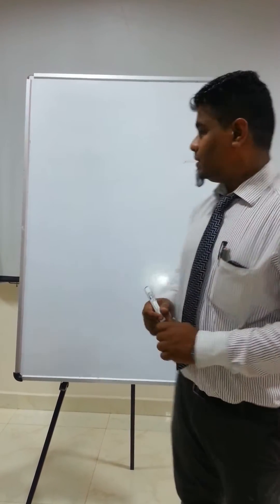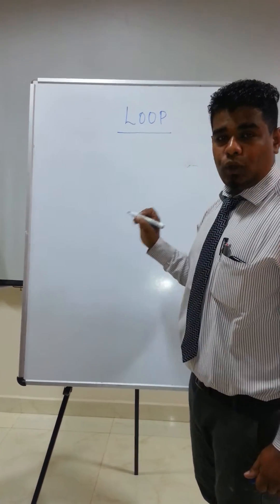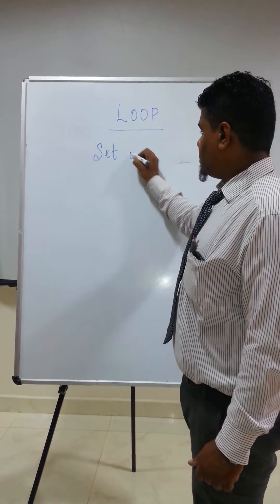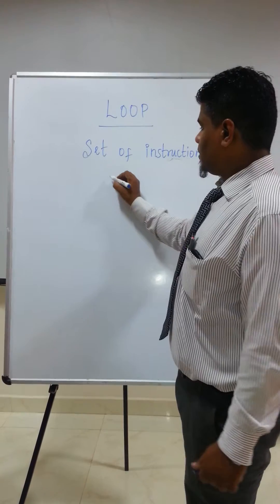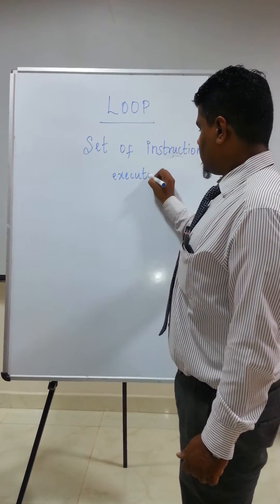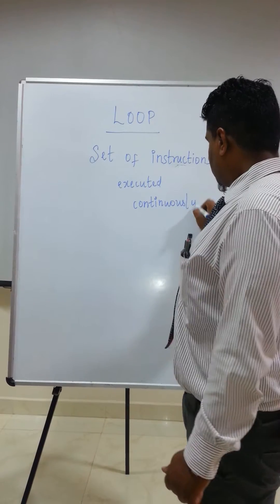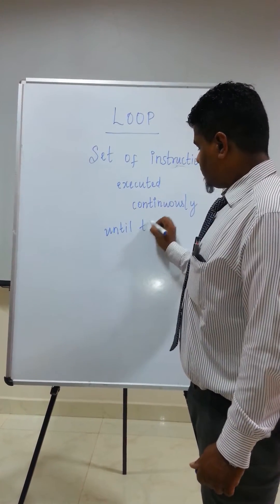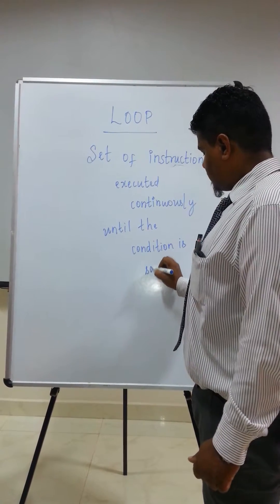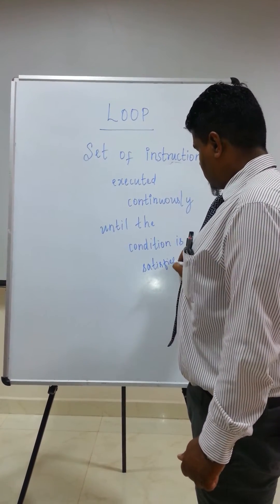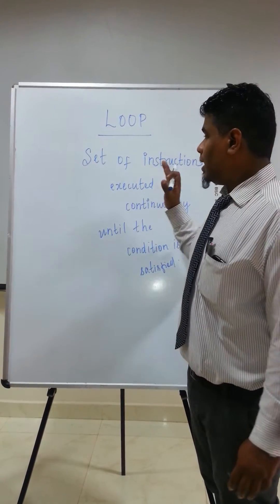Now I will tell you what a loop is. A loop is a set of instructions executed continuously until the condition is satisfied. The programming statements will be executed only when the given condition is satisfied. This is the definition of loop.